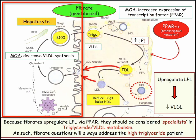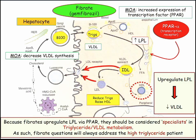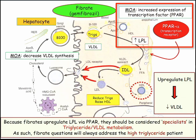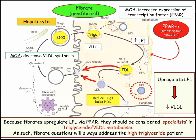Let's start with the hepatocyte — we're talking about fibrates and how they work. The main mechanism of action, similar to TZDs, is that they increase expression of a transcription factor. In this instance, it's upregulating lipoprotein lipase. So by definition, based on those pathways, if you upregulate lipoprotein lipase, what you're doing is increasing metabolism of fats. That's the most important thing to know about fibrates.